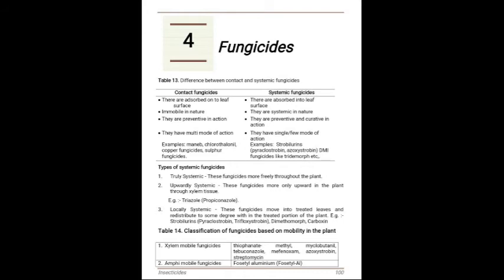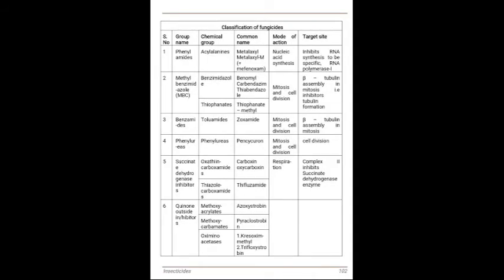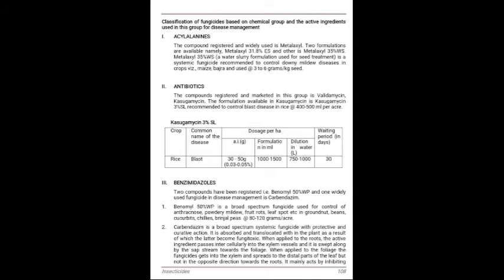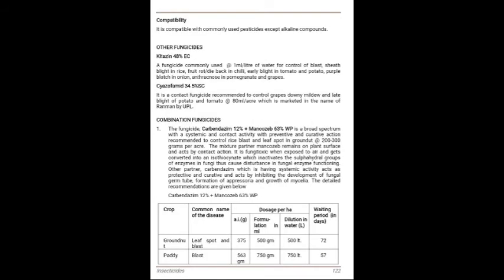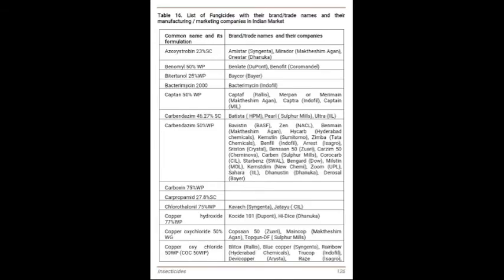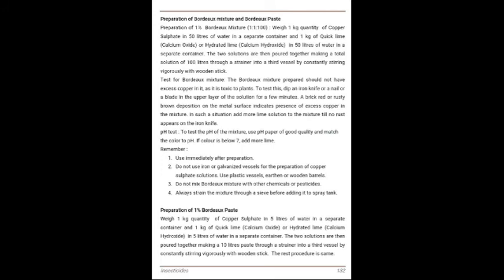Table 14 has the classification of fungicides on mobility in the plant. Next, classification of fungicides based on chemical group and the active ingredient used for disease management. Next, combination of fungicides — for example, Carbendazim 12% plus Mancozeb 63% WP. Table 16 has a list of fungicides with their brand or trade names and their marketing companies in the Indian market. Next, preparation of Bordeaux mixture and Bordeaux paste.